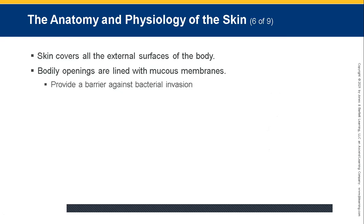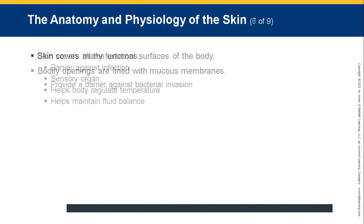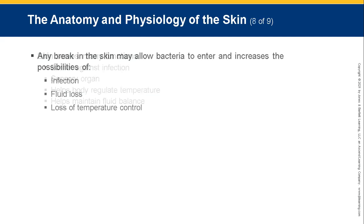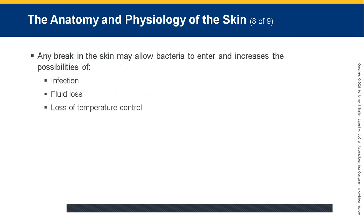The skin covers all external surfaces of the body. Bodily openings are lined with mucous membranes, whose purpose is to prevent bacterial invasion. The skin serves many functions and is the largest organ in the body. It acts as a protective barrier against infection, functions as a sensory organ picking up environmental changes and relaying information to the brain, helps regulate temperature, and helps maintain fluid balance. Any break in the skin may allow bacteria to enter, increasing the possibilities of infection, fluid loss, and loss of temperature control.